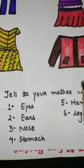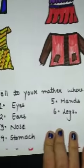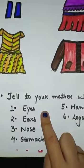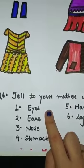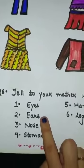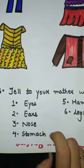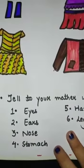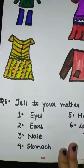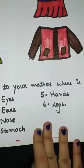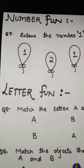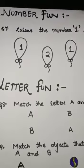Question six: tell your mother where your body parts are — your eyes, ears, nose, stomach, hands, and legs. You have to tell these six body parts to your mother. The thematic concept ends here, and remember the thematic concept is to be answered orally.